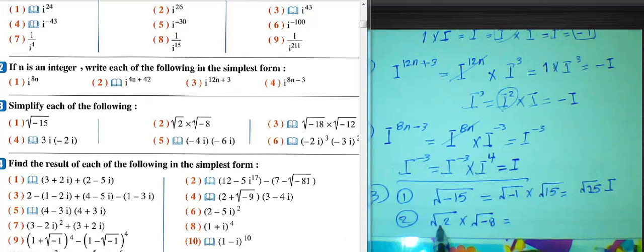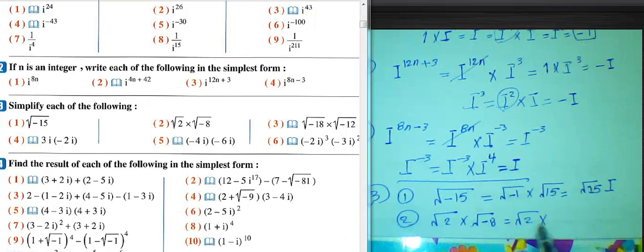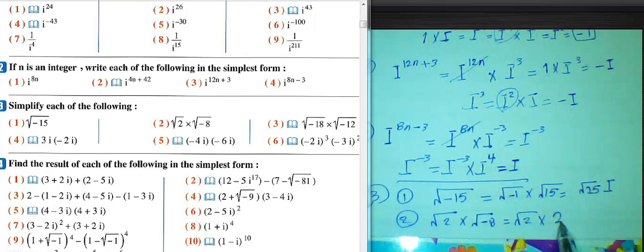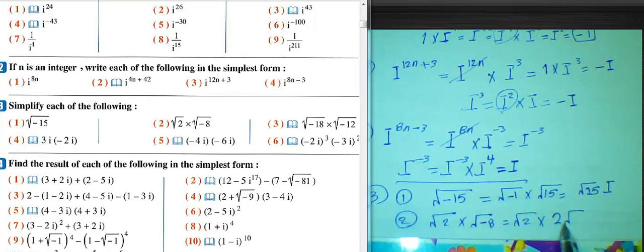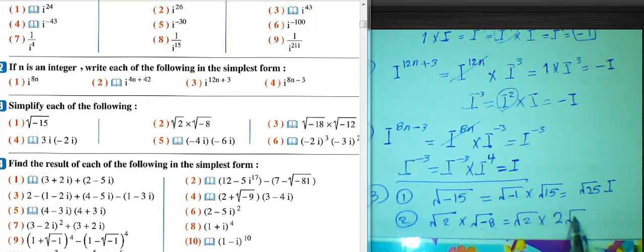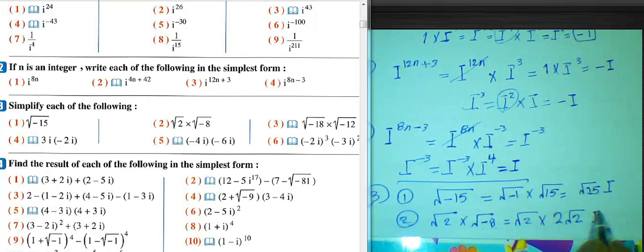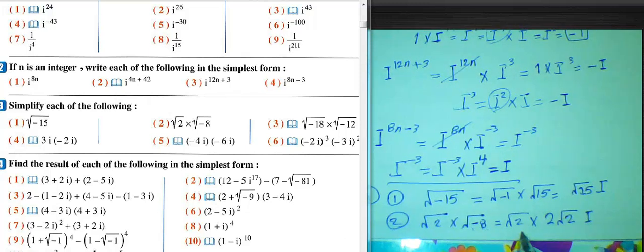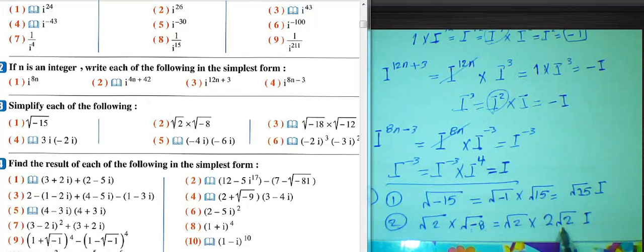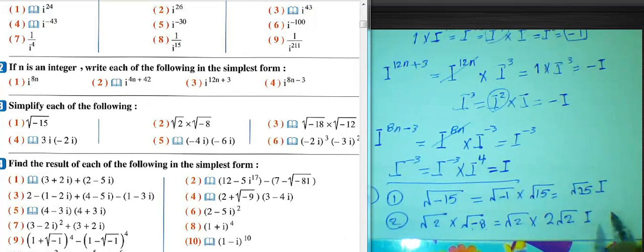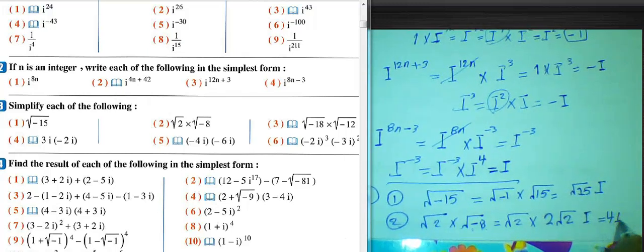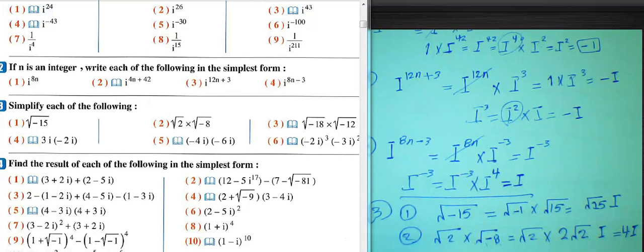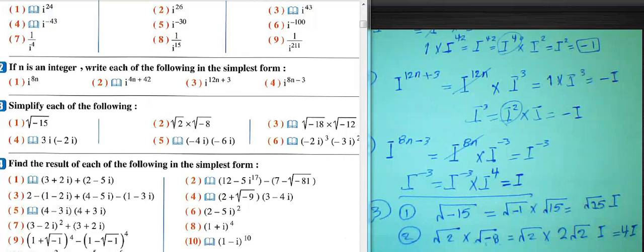Number 2: √2 times √(-8). We find: √2 times √8, and √8 equals 2√2. √(-1) equals i. So √2 times 2√2 equals 2 times 2 equals 4. The result will be 4i.